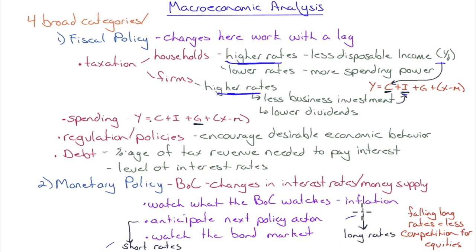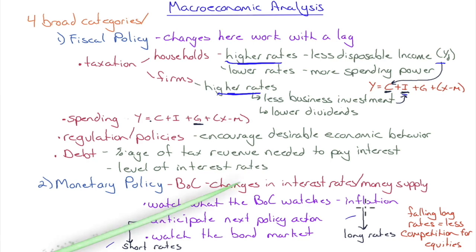Where the bond market starts to move tends to signal where interest rates and inflation are headed — the bond market is typically the first mover before the stock market, and 'the smart money is in the bond market.' When long-term interest rates rise, bonds compete with equities; when long-term rates fall, there's less competition for equities, boosting the stock market. Since the 2008–2009 financial crisis, the long end of the yield curve has been held very low, pushing long-term investors out on the risk curve and supporting equity prices.